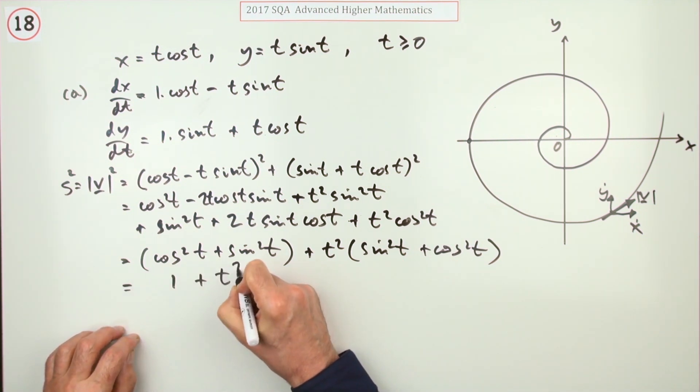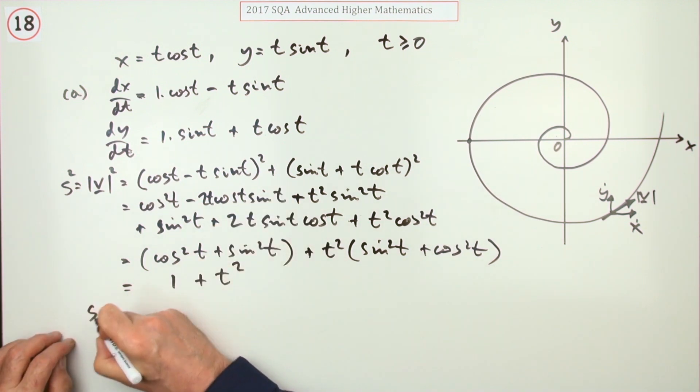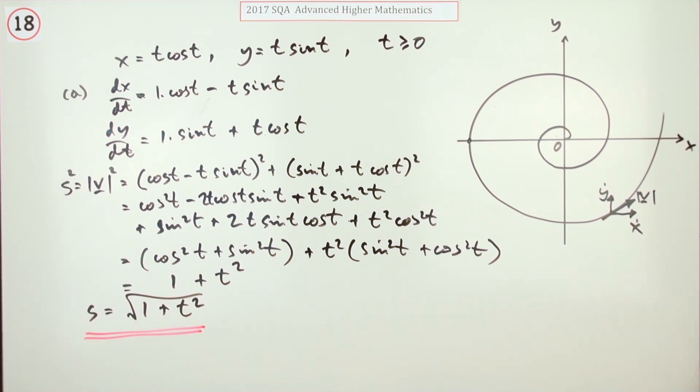Which means the speed's going to be the square root of 1 plus t squared. So there you go, that would have been part A for those five marks we reckoned.